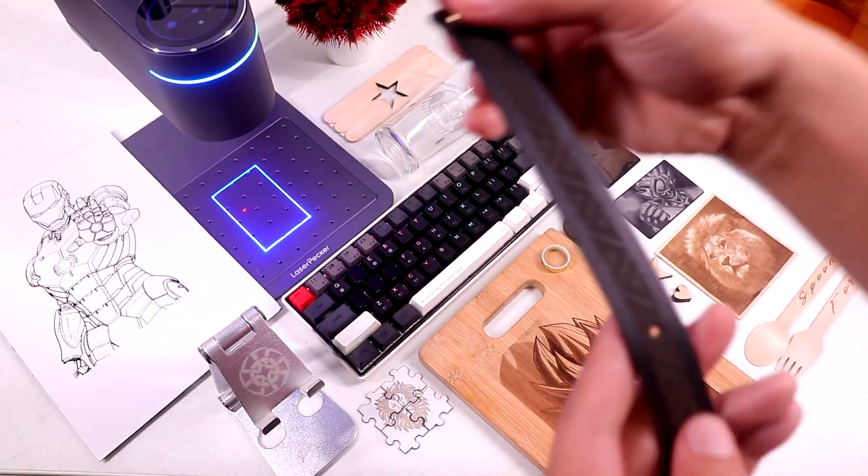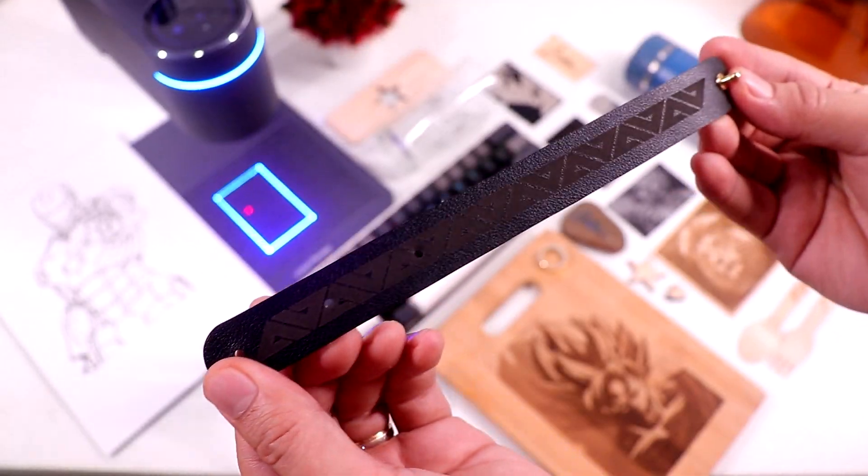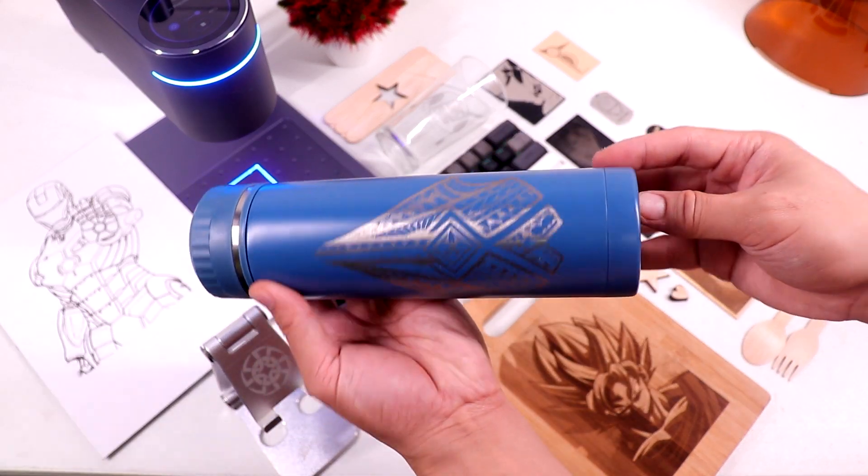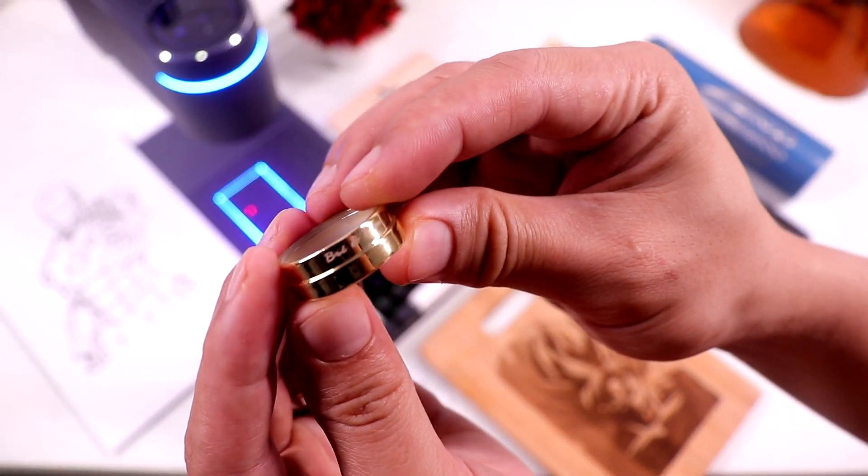Now this one is a leather wrist strap. And the result is awesome. And here's a stainless water tank. I also printed on a ring.